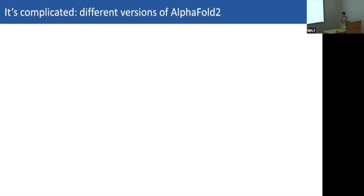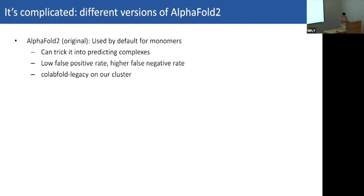Now the versions of AlphaFold, which can be confusing. There are three major versions implemented. The first — AlphaFold 2 original — is used by default for monomers, works great, and has been rigorously tested. You can also trick it into predicting complexes, and DeepMind told us it has a fairly low false positive rate for complex prediction — if it predicts two proteins interacting, there's likely something worth investigating. However, it has a higher false negative rate. On our implementation, it's available as colabfold_legacy.